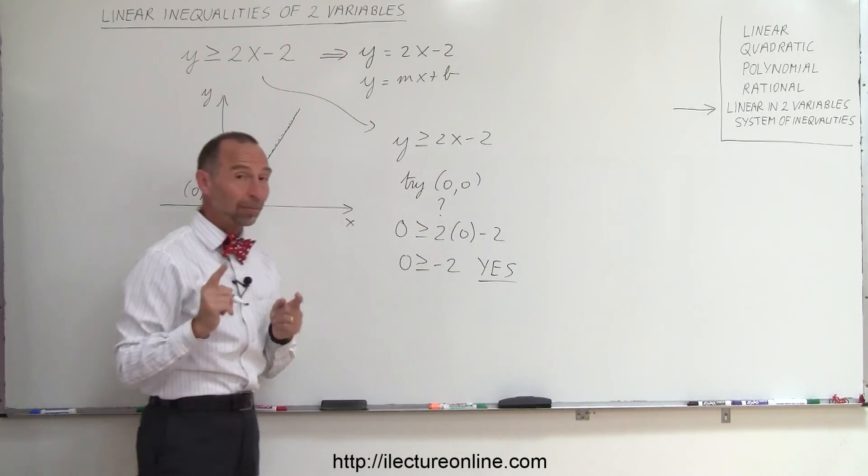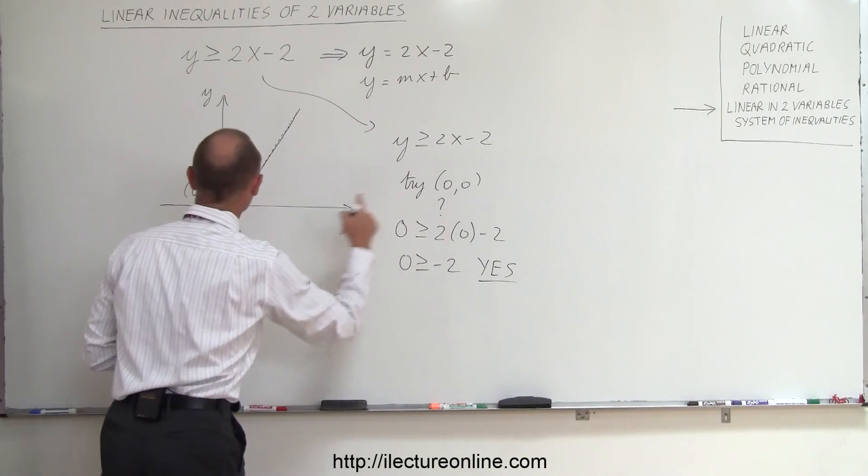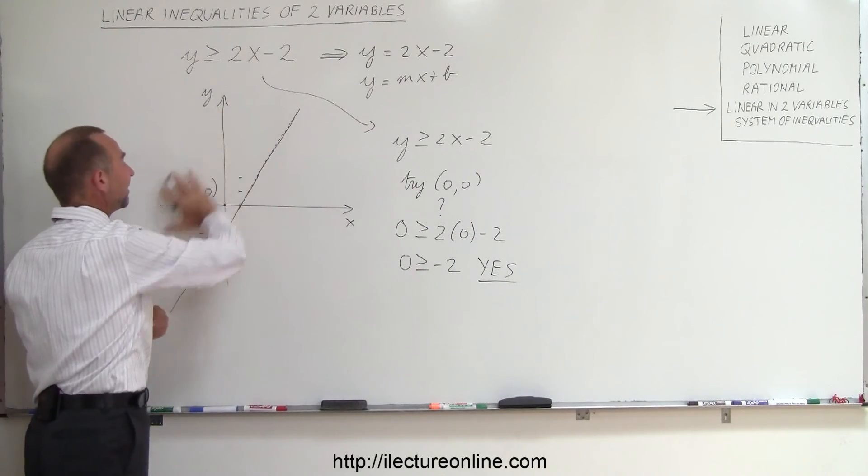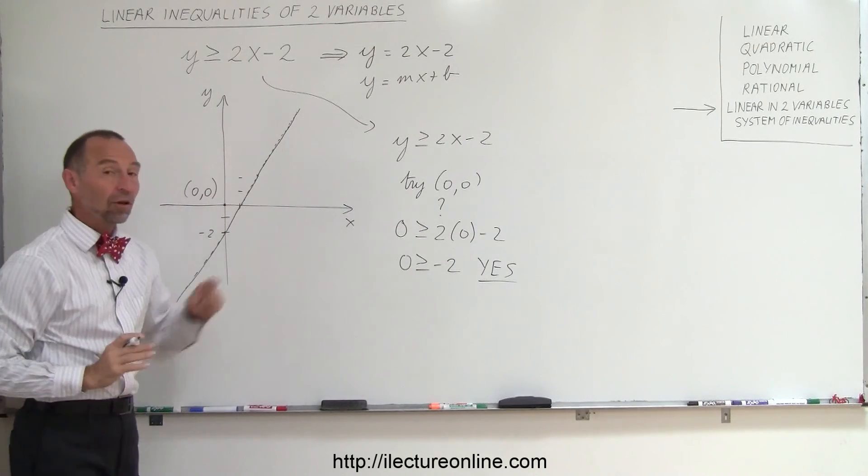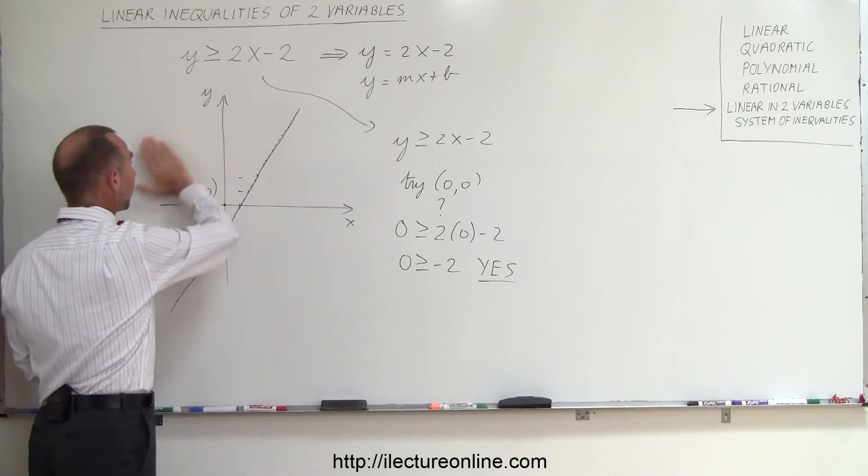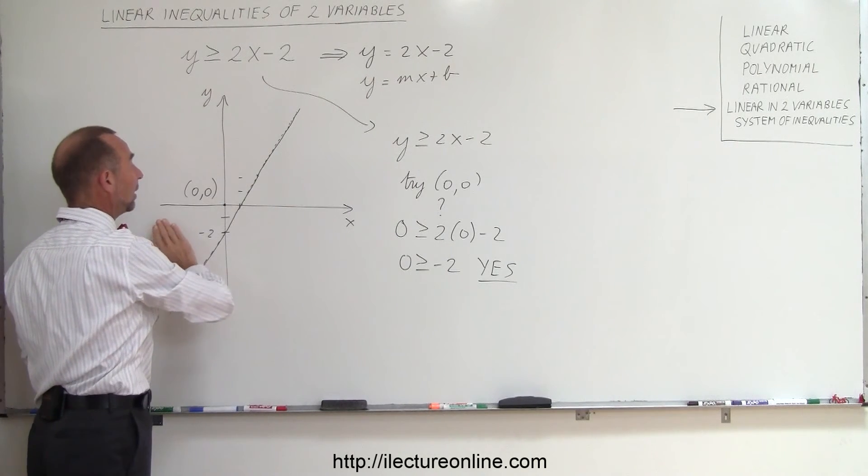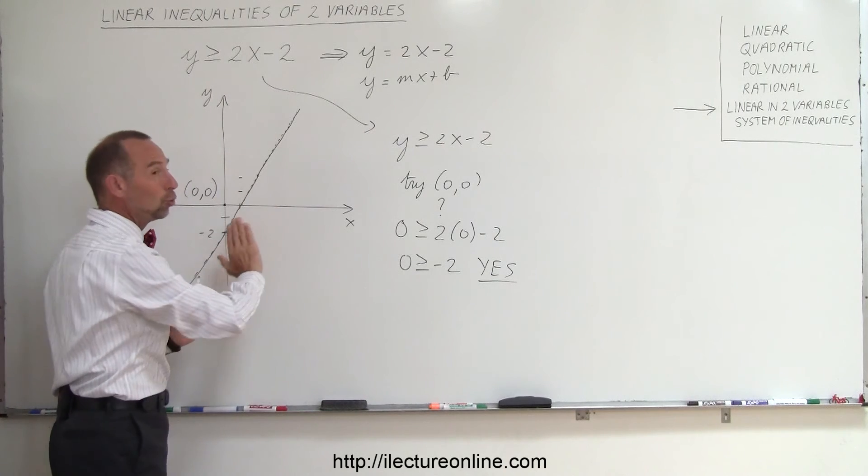All right, which means that the point that I chose, my trial point right here, is in the region that satisfies inequality, which means all the other points on that side satisfy inequality. That means the points on the other side do not.